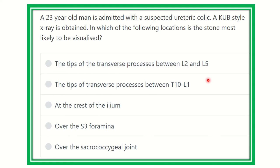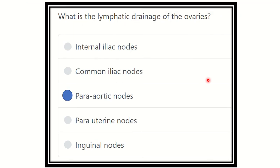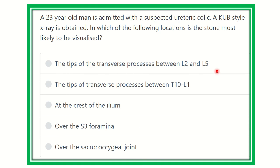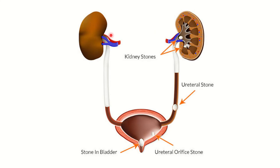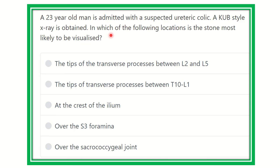Hi everyone, welcome to another question and answer session for MRCS exam. A 23-year-old man is admitted with suspected ureteric colic. A KUB x-ray is obtained — in which of the following locations is the stone most likely visualized?